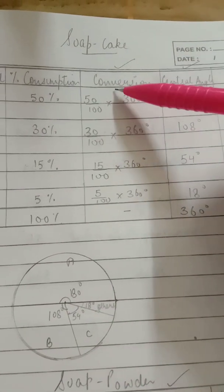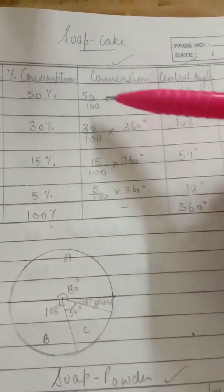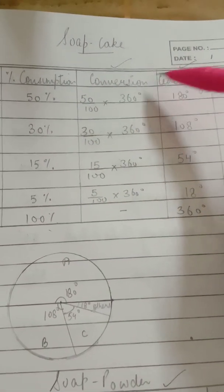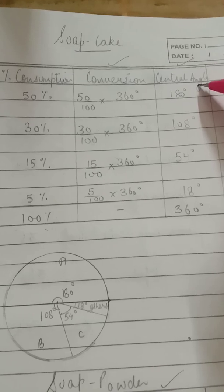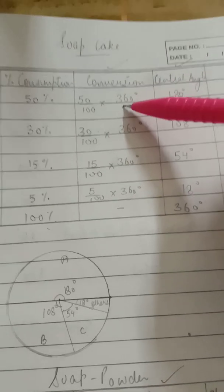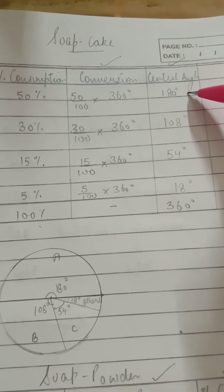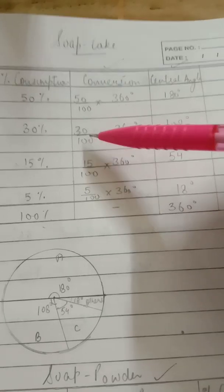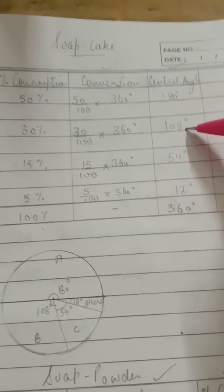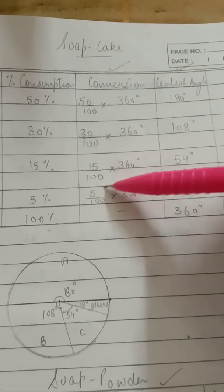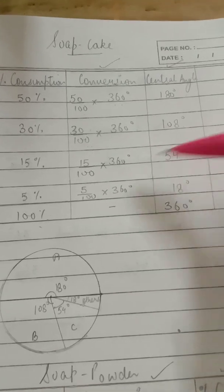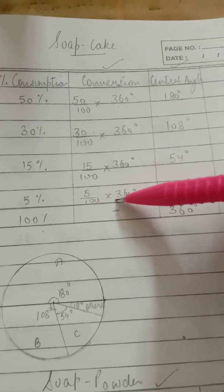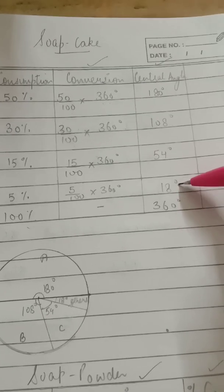We all know that first is 50%, total is 100%, so 50 upon 100. To convert this value to central angle in degrees, multiply by 360 degrees which gives you 180 degrees. Next one: 30 upon 100 into 360, that's 108 degrees. 15 upon 100 into 360 degrees, that's 54 degrees. 5 upon 100 into 360 degrees, which is 18 degrees.